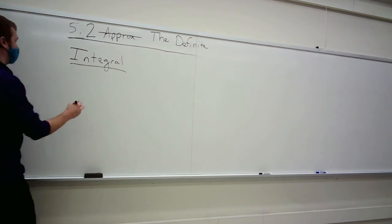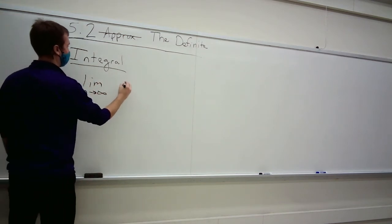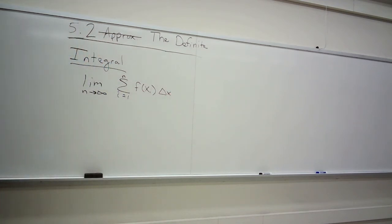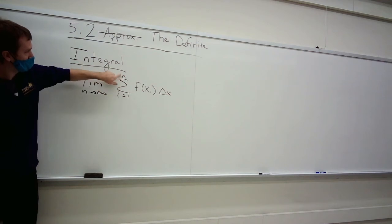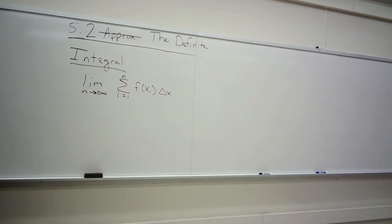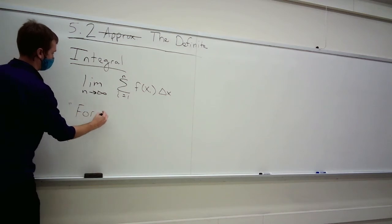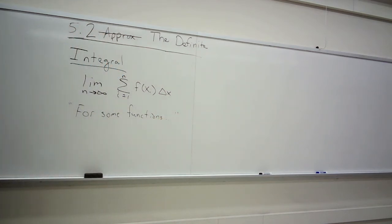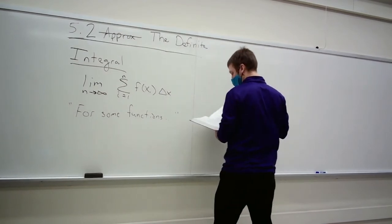We saw that if you take the limit as n → ∞ of the sum Σ f(xᵢ*)Δx, where xᵢ* is your choice of height in interval i, and you multiply the areas of every i-th rectangle and add them all up — this limit, for certain functions, gives you a perfect approximation of your area.